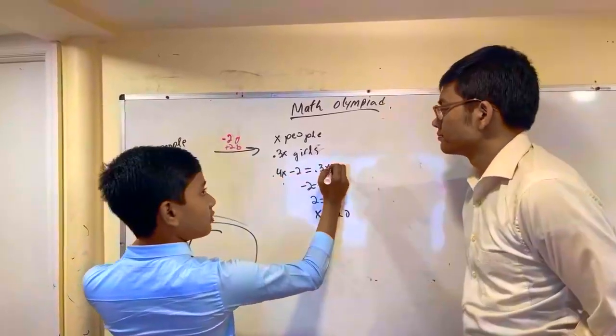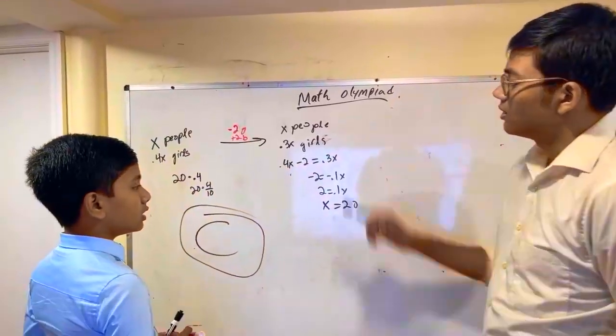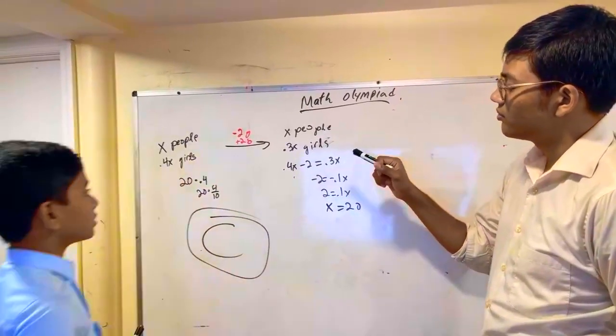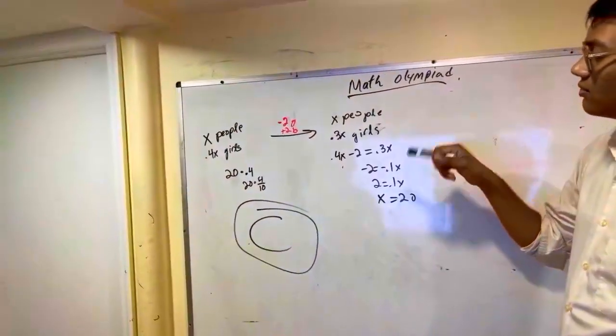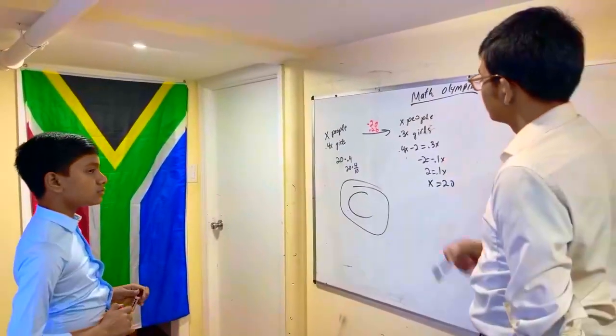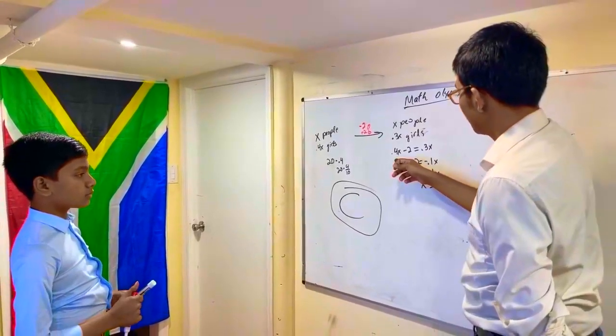And point four x minus two is equal to this amount of girls. OK, so that... wait wait wait wait. Point four x?